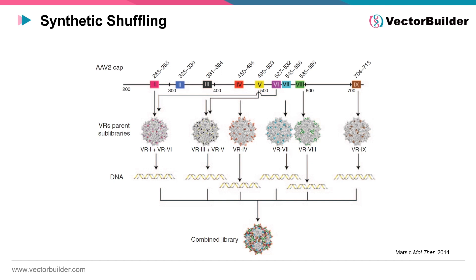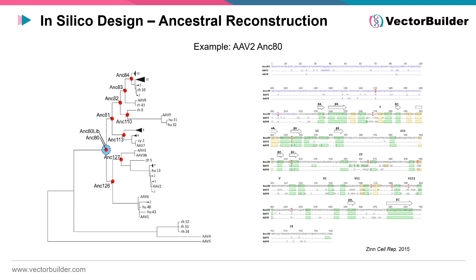Another variant of this method, deemed synthetic shuffling, utilizes the same fundamental principles as DNA family shuffling. However, in this technique, a more targeted and precise approach is adopted, focusing exclusively on specific variable regions for library generation. Instead of shuffling the entire CAP gene, synthetic shuffling strategically hones in on particular regions known to influence the capsid's functional attributes, such as receptor binding and cellular entry, allowing for the creation of AAV variants with finely tuned characteristics optimized for specialized gene therapy applications.